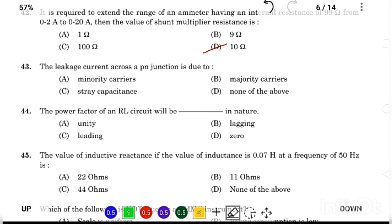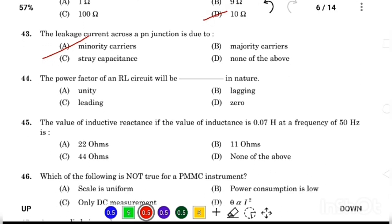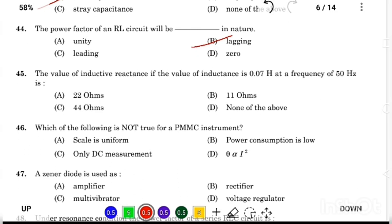The leakage current across a PN junction is due to Answer Option A, minority carriers. The power factor of an RL circuit will be in nature Answer Option B, lagging. The value of inductive reactance if the value of inductance is 0.07 H at a frequency of 50 Hz, Answer Option A, 22 ohms.